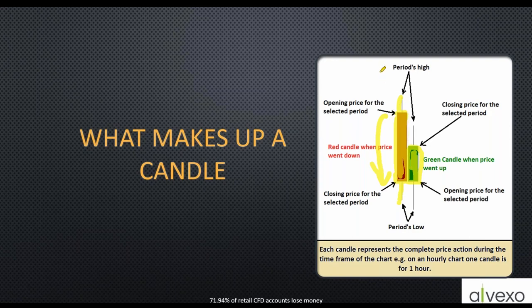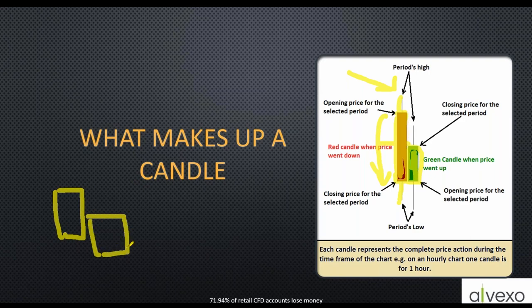A lot of people ask: if that's a one-hour candle, can't we cut it in half and have two 30-minute candles? That's not the case. When looking at a one-hour candle, we don't know whether the high was obtained in the first 30 minutes or the second 30 minutes, and we don't know the open or close for each half-hour. So we use a 30-minute chart to see more definition of what the markets are trying to tell us.